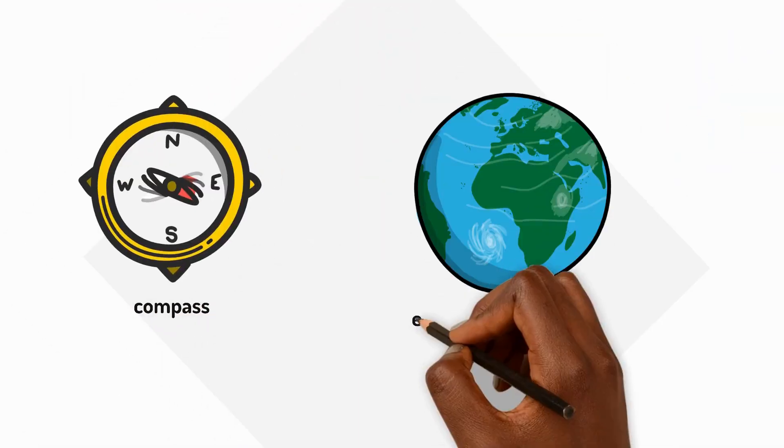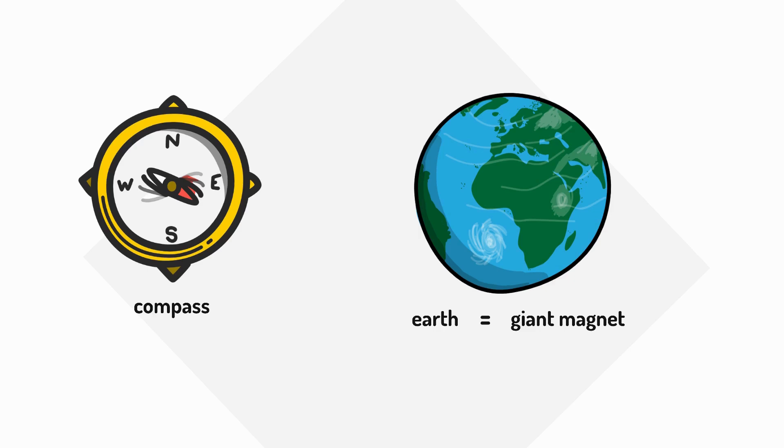The reason compasses work is that Earth itself is like a giant magnet. In the last video, we learned that some metals are magnetic. Deep inside our planet, melted iron and nickel move around and pull on the compass needle, making it point north.